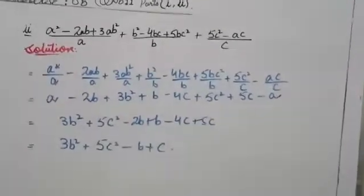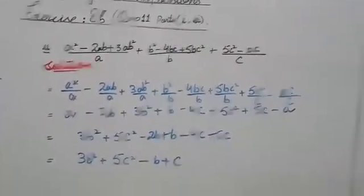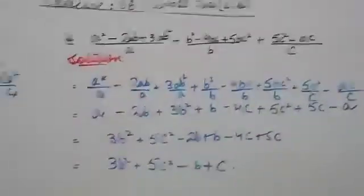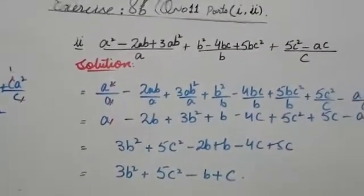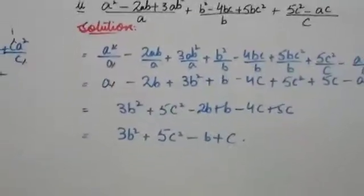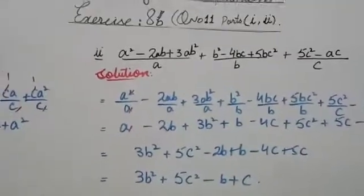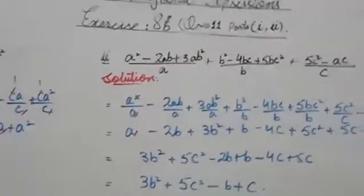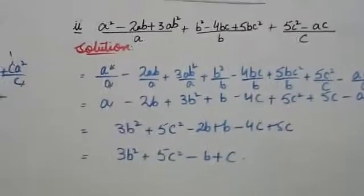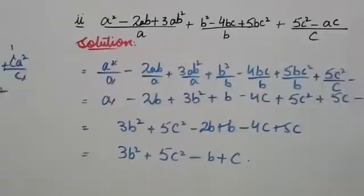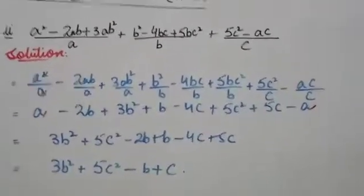For a² minus 2ab plus 3ab² by a: a² by a — in the numerator a is two times, in the denominator a is one time, so one a cancels, leaving a. Similarly, ab by a: a cancels, leaving minus 2b. Then ab² by a: a cancels, leaving plus 3b².